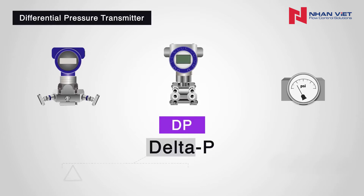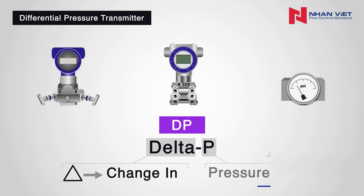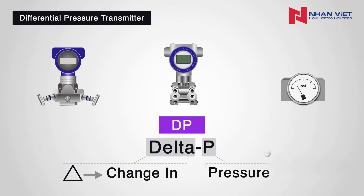Delta, meaning change in, and P, meaning pressure. In addition, most people will simply call a differential pressure sensor a DP sensor or transmitter. From now on, we will refer to these devices as DP transmitters.